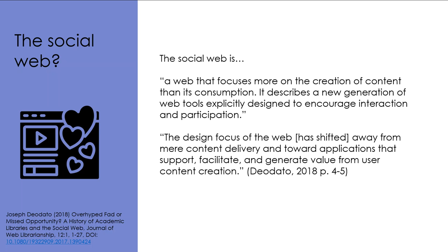We can see evidence of the social web in what we generally term social media or social networking platforms, for example Facebook, Instagram, social bookmarking platforms such as Pinterest or Diigo, and other content collection or sharing platforms including YouTube, Flickr, and Pixabay — anything that allows individuals to interact and create or share content via the internet. This contrasts with the first iteration of the internet, which required quite a few technical skills to publish online, so we had a very small number of people creating content and most people consuming it rather than contributing.